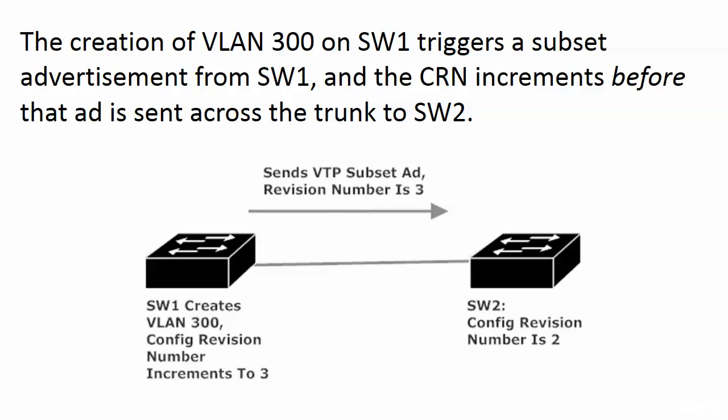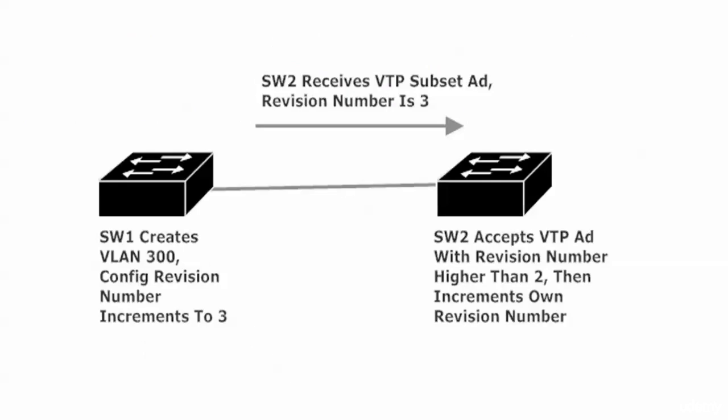In this walkthrough, switch one and switch two start with a revision number of two. The creation of VLAN 300 on switch one triggers two events, and the order is very important. First, the switch that the VLAN is created on — switch one — increments its own CRN to three. Then it sends the VTP subset advertisement with revision number three. Switch two receives it, has its own CRN of two, looks at the incoming CRN, sees it's higher, accepts the ad, overwrites its VLAN database, and then increments its own revision number.